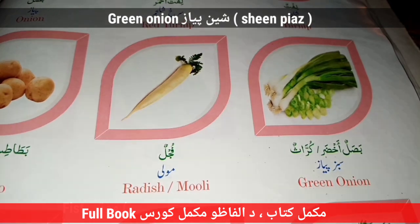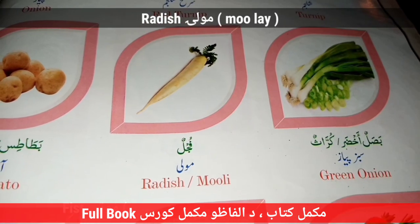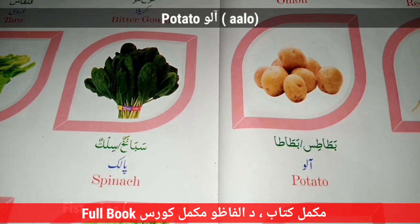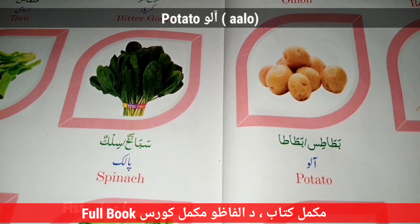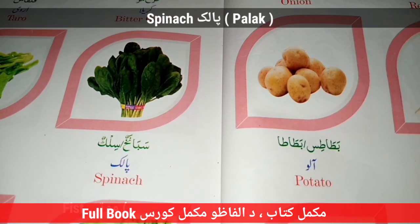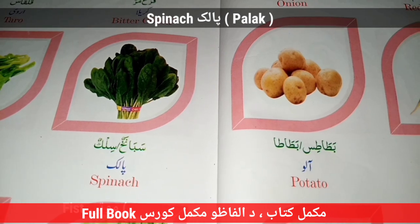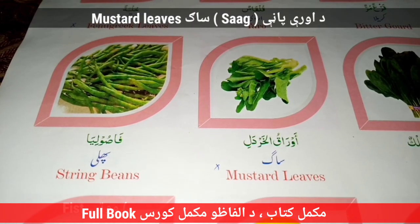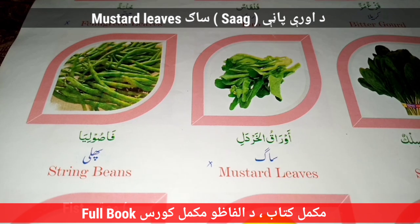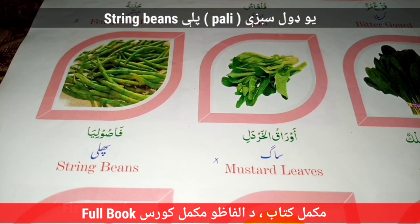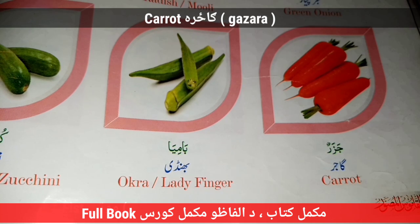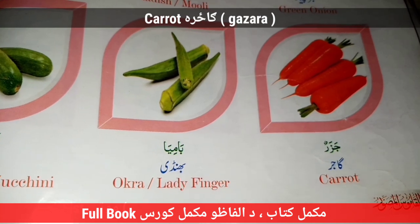Radish — Mulay. Potato — Alu. Spinach — Palak. Mustard Leaves — Saag. String Beans — Pali. Carrot — Gazzara.